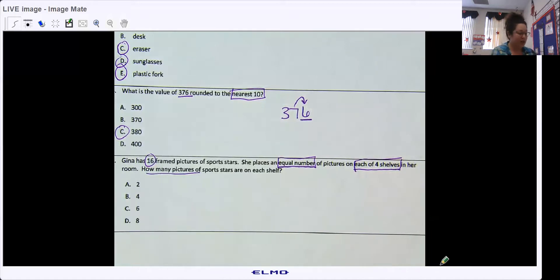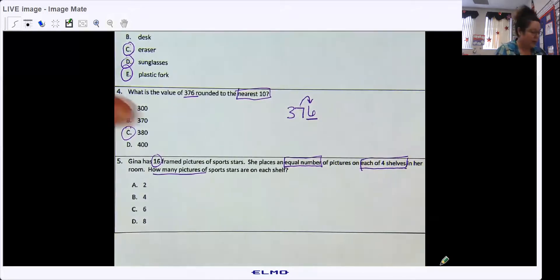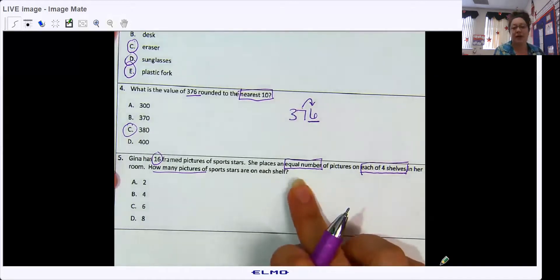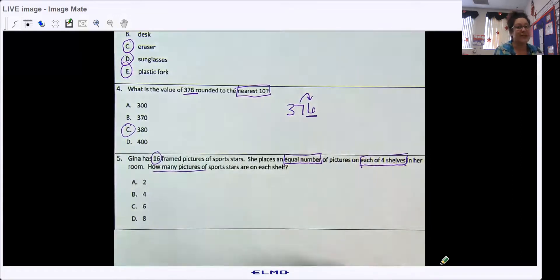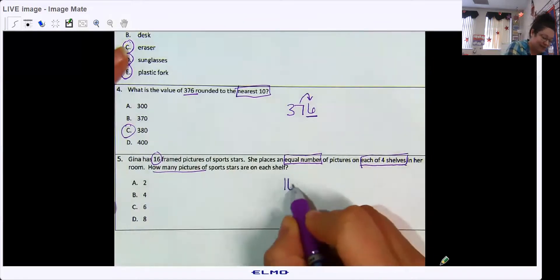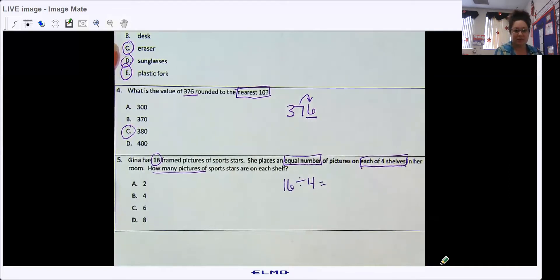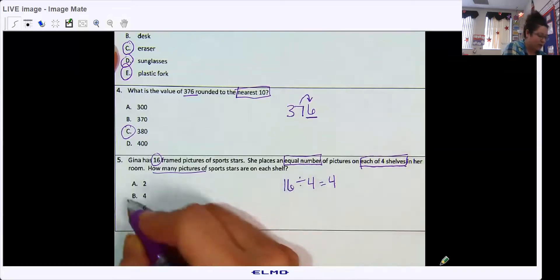If you know what to do, you can go ahead and solve it. If you need the instruction, the reminder, 16, so I'm not going to get bigger, no adding, no multiplying. If I'm putting an equal number on each shelf, you're putting things into equal groups, that is division. And 16 divided by 4, you should know that because you should know four times four is 16. So my answer would be B.